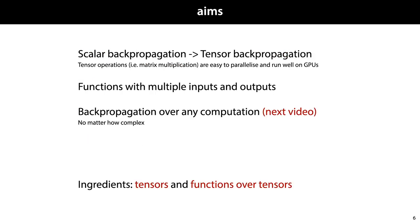These are the aims for the first two videos. In order to scale up the basic principle of backpropagation on neural networks, we want to move from operations on scalars to the linear algebra view, where everything is a tensor and all operations, including those in the backpropagation step, are tensor operations. We want to deal with functions that can consume multiple inputs and produce multiple outputs, and then in this setting we want to define backpropagation in an efficient way.